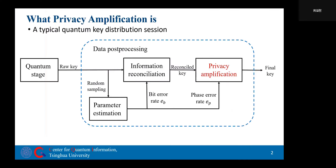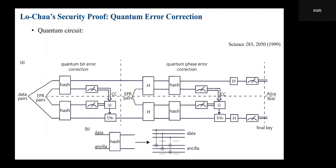As we all know, private amplification is one of the key steps to guarantee the security of quantum communication, especially quantum key distribution. A typical quantum key distribution session must include a private amplification step to remove possible information leakage in the key bits. One explanation of its effect comes from Lo, Chau, and Mayers' security proof of QKD based on quantum error correction. In 1999, Lo and Mayers proposed that QKD security could be guaranteed by introducing ancillary EPR pairs to carry out quantum bit error correction and quantum phase error correction.